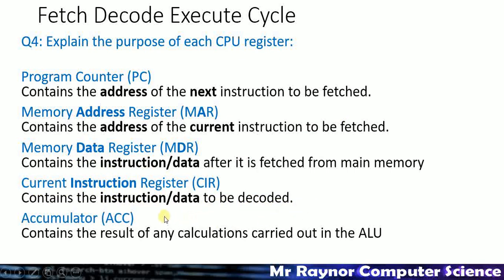The fifth register is the accumulator, which stores the results of calculations. The ALU — arithmetic logic unit — is a separate component, not really a register. That's where addition, multiplication, and subtraction are carried out. The logic part handles comparisons like greater than and less than, or Boolean logic such as AND, OR, and NOT. Once something has been calculated, the result gets stored in the accumulator.